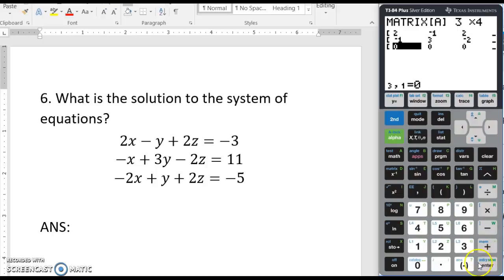And the last equation, negative 2, plus... Let's delete that. Over to the next one. We have a positive 1, enter, a 2, enter, and then finally a negative 5.